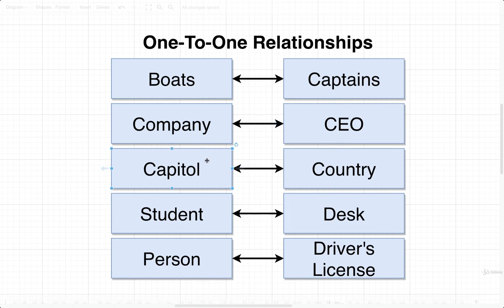This is a pretty good example: capitals and countries. As far as I'm aware, there are no cities in the world that serve as the capital for many different countries at the same time, so we would say that a capital has one country and a country has one capital. Similarly, students and desks — in general, a student will sit at one desk, and a desk will seat one student at a time.